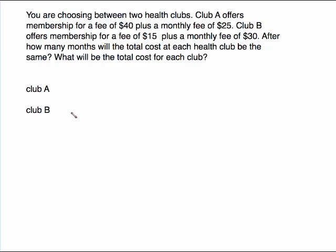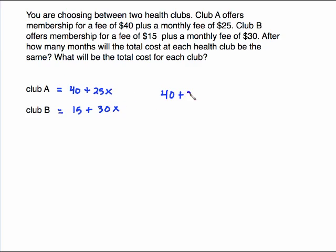We're going to write expressions for both clubs. Club A charges $40 right off the bat, so it's $40 plus the monthly fee — $25 per month, which is 25 times x. Club B charges only $15 up front, but the monthly fee is $30 per month, so that's 30x. It asks after how many months the total cost at each club will be the same — same means set these two expressions equal to each other. So Club A's price equals Club B's price.